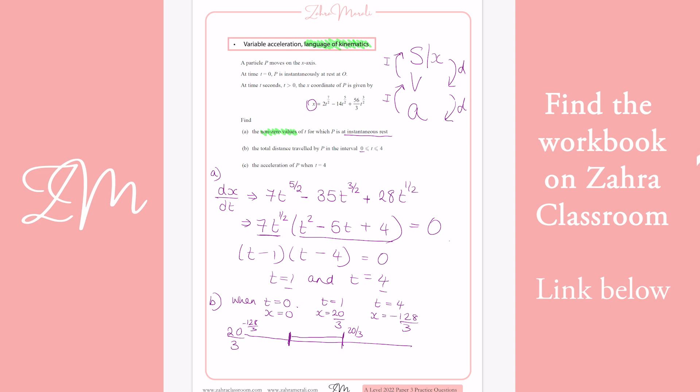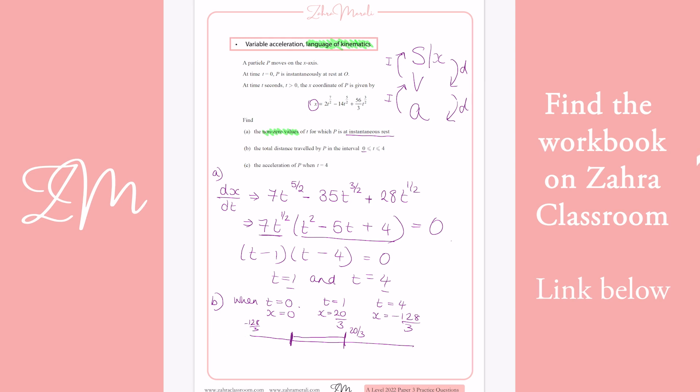So your total distance traveled is, I've started here, I've gone 20/3, then I've gone all the way there. But first, I've had to go back to the zero mark to get there. So I'm going to have 2 lots of 20/3 plus 128/3, which gives you 56.